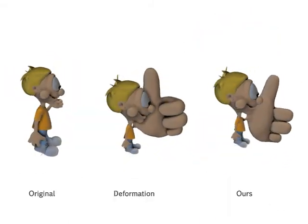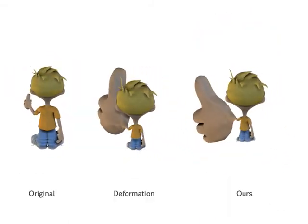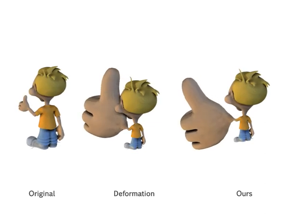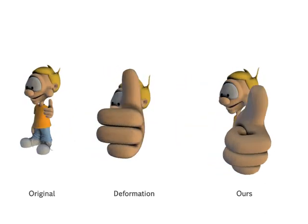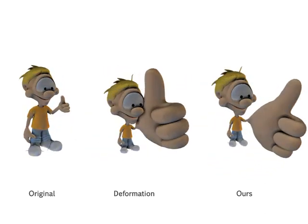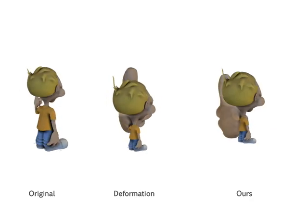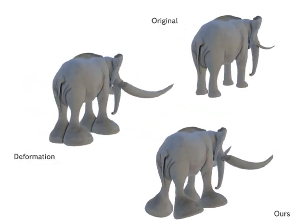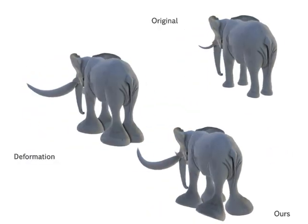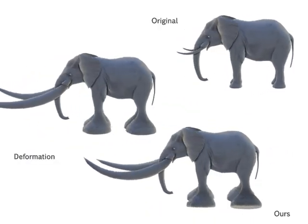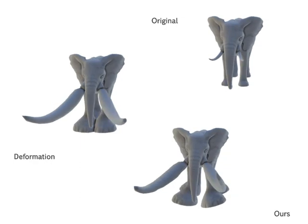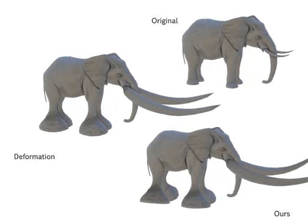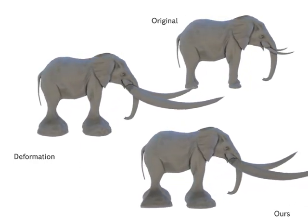Here you see a deformation of a comic character. Finally, this is a visualization of black market prices for body parts of an elephant.